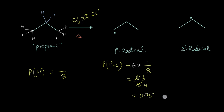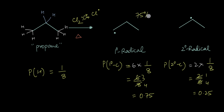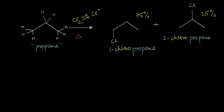On the other hand, only two hydrogens lead to a second-degree radical, so the probability of forming a second-degree carbon radical is 2 × (1/8) = 2/8 = 0.25. Purely statistically, 75% of radicals should be first-degree and 25% second-degree, meaning 1-chloropropane should be 75% and 2-chloropropane should be 25%.